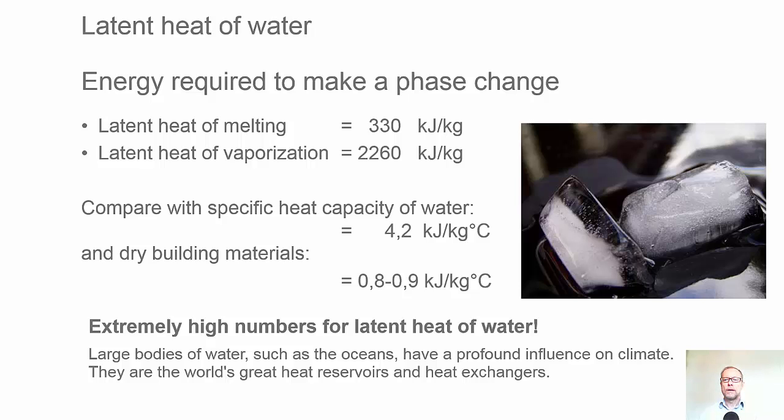Latent heat of water. Latent heat is the amount of energy required to make a phase change. For instance, we have thawing or melting of ice, going from solid phase to liquid phase, which requires 330 kJ per kilogram. If we would like to evaporate it, going from liquid water to water vapor, it requires even more: 2260 kJ per kilogram.